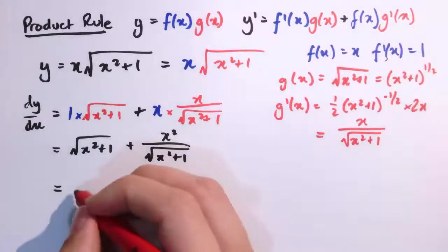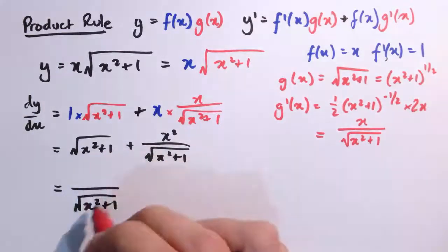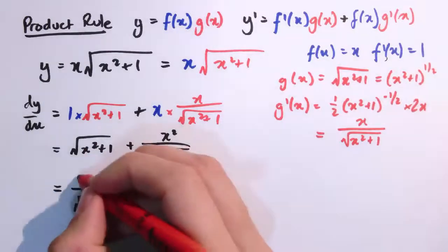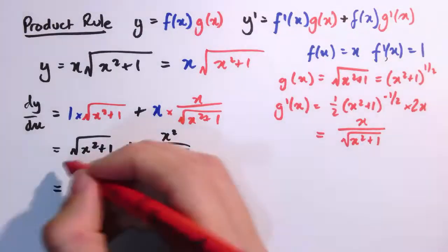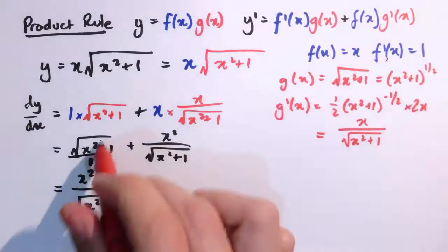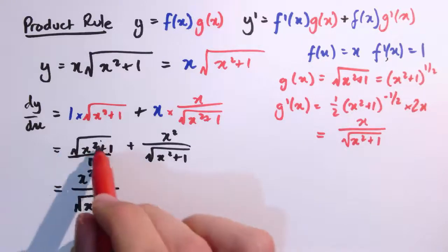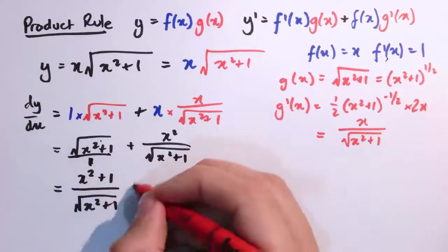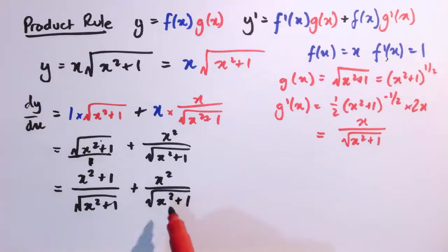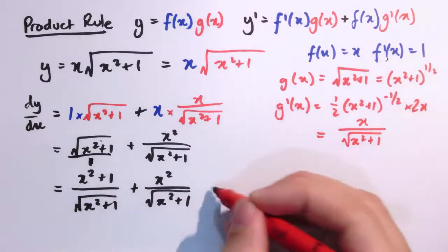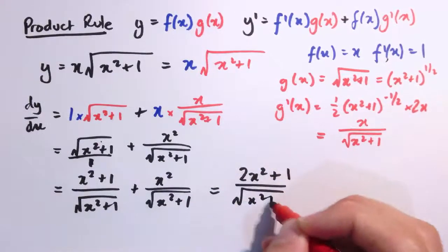Now we have a common denominator, so we can combine the two fractions. The numerator becomes (x squared plus 1) plus x squared, which gives a final answer of (2x squared plus 1) divided by the square root of (x squared plus 1) — a nice and neat result.